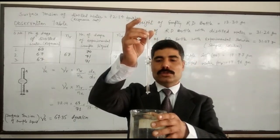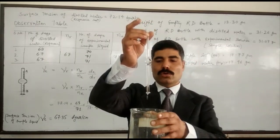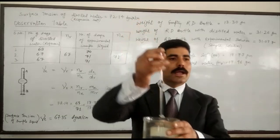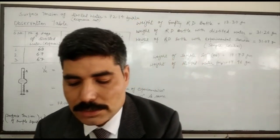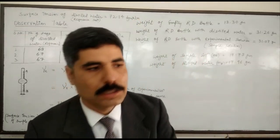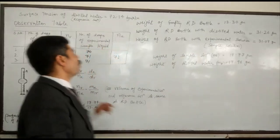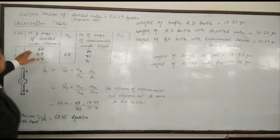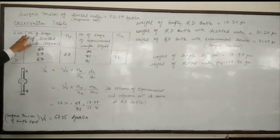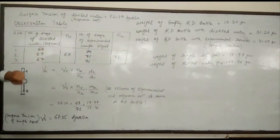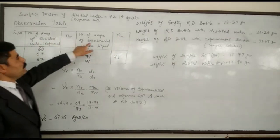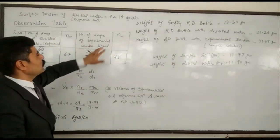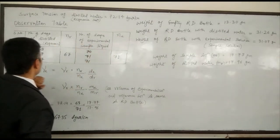We count the drops: one, two, three, four, and so on. These numbers of drops are recorded in the observation table, which contains columns for the number of drops for distilled water and for the experimental sample solution respectively.